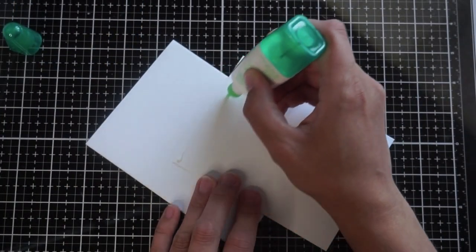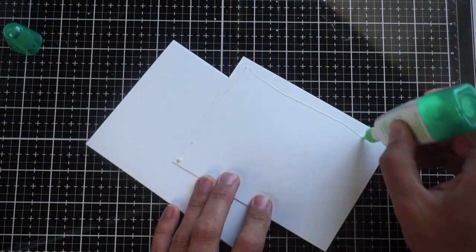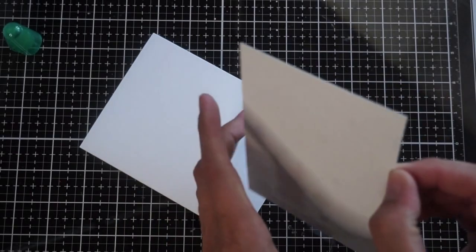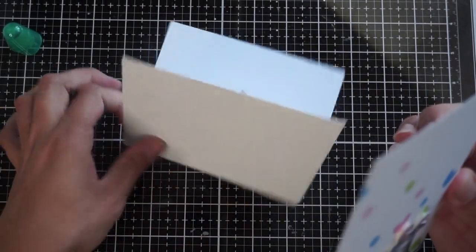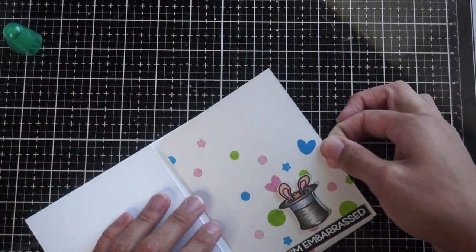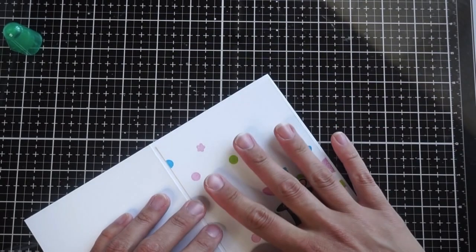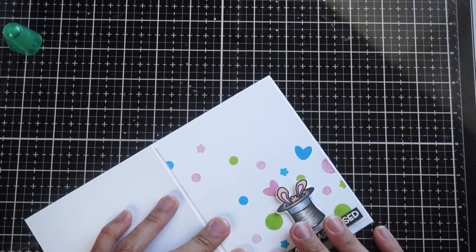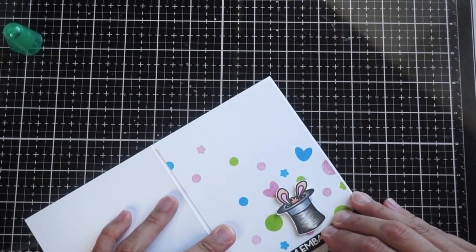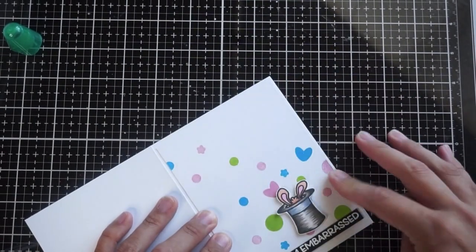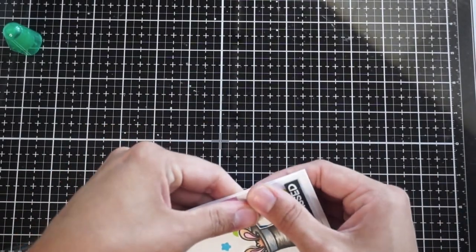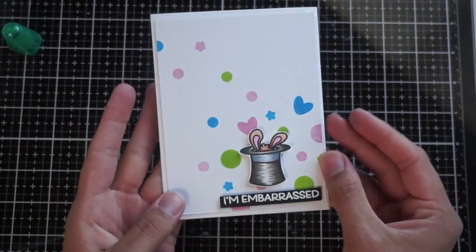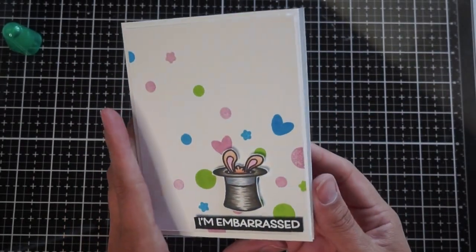To adhere my decorated card front to my card base, I am going to be using Tombow Mono Multi Glue. And I use glue instead of double-sided tape or score tape or something like that, because it gives me a little bit more wiggle room to get it perfectly in the center. Obviously, if you've ever glued anything, you get an extra second or two to move it around before the glue really dries and hardens and you don't have a chance to do so anymore. So that's why I enjoy using glue to adhere my card fronts to my card bases and things like that.